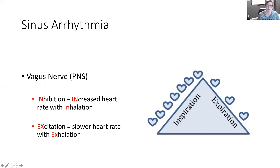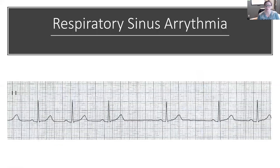You may have noticed this on yourself or others — if you've taken someone's pulse and it's really fast then slows down, then fast then slows down, that's what it's going to look like on a rhythm strip. On this respiratory sinus arrhythmia ECG tracing, it looks pretty normal: P waves are round and upright, QRS is narrow, T wave is round and upright. The P, QRS, and T complexes repeat normally — but then all of a sudden there's a really long gap.